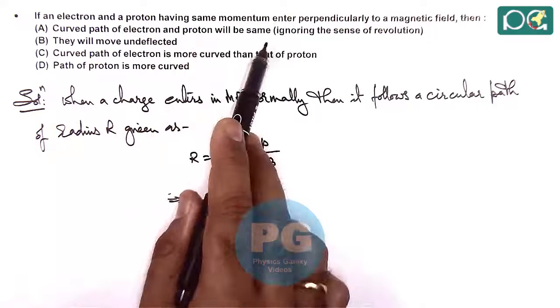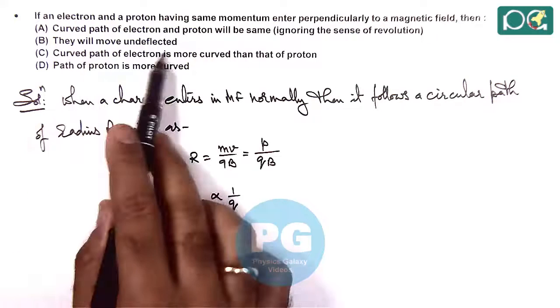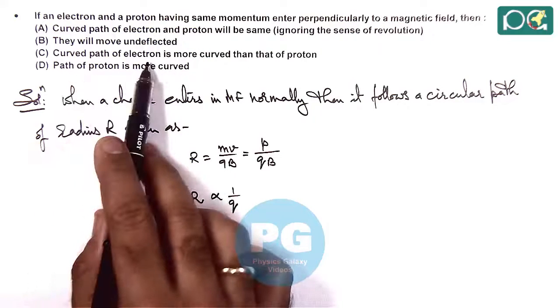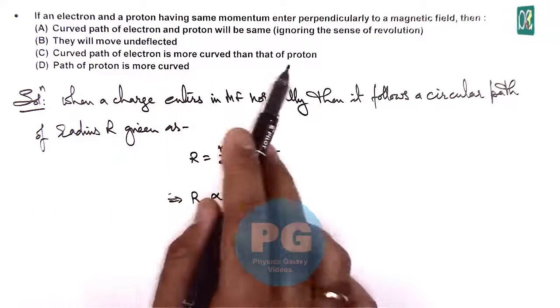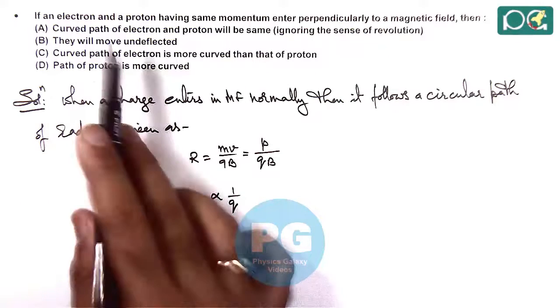They move undeflected is wrong. Curved path of electron is more curved than that of proton, or that of proton is more curved—that's wrong.